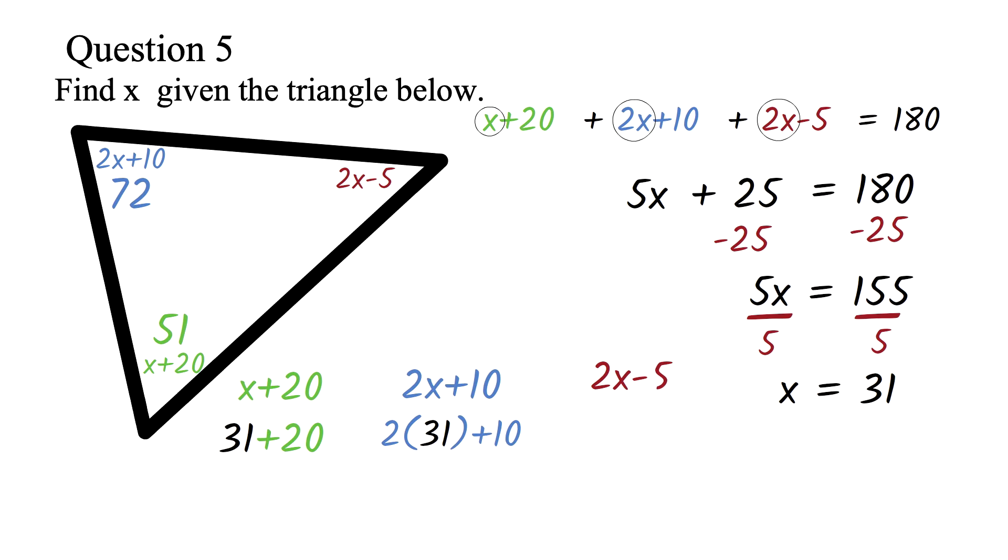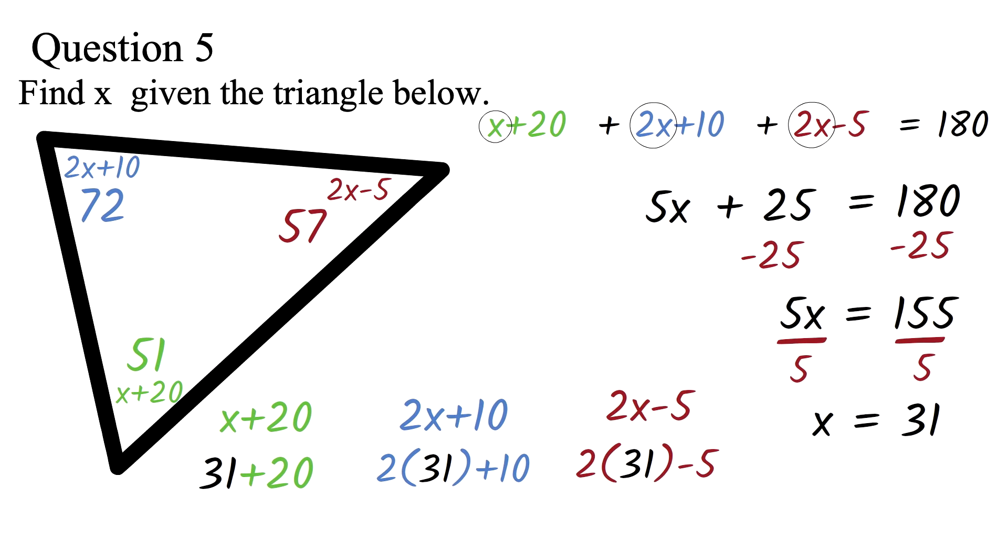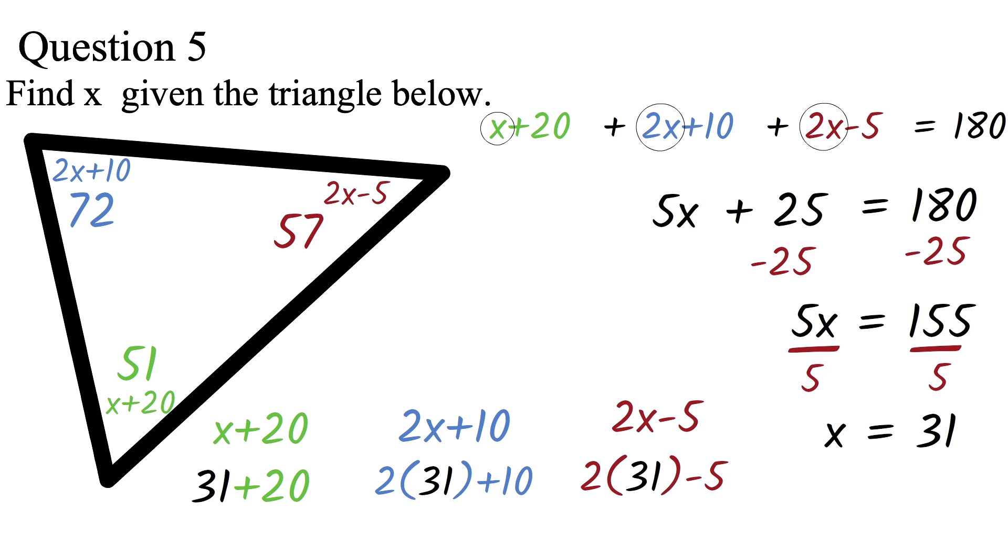And finally, for the angle 2x minus 5, we will have 2 times 31 minus 5. This will be 57 degrees. We can see that when we add these 3 values, we will get 180. We will end this video here. Have a great day. See you in the next video. Bye bye.